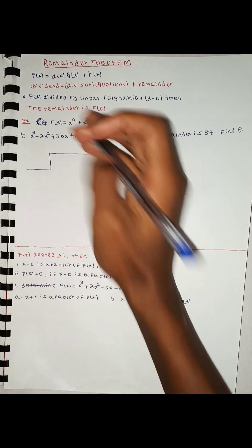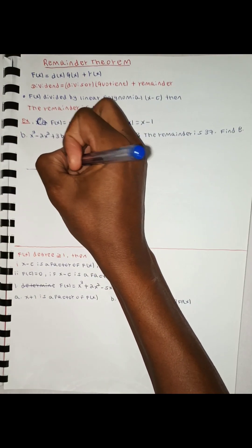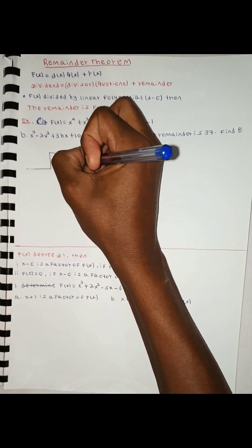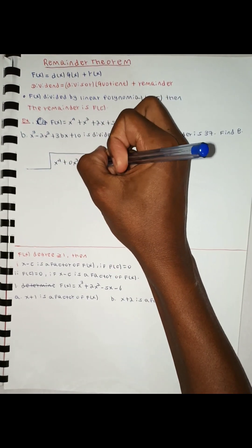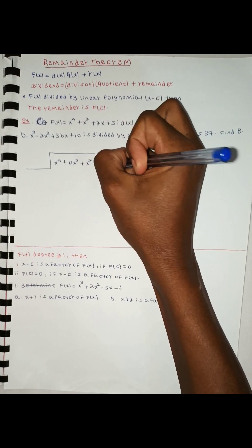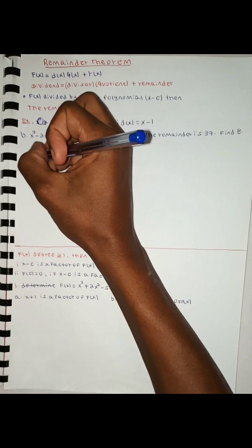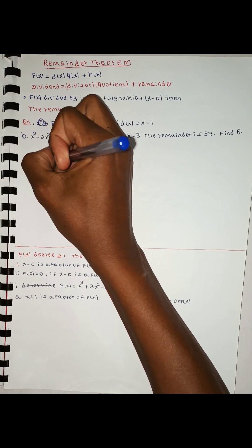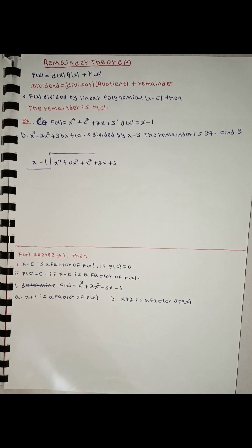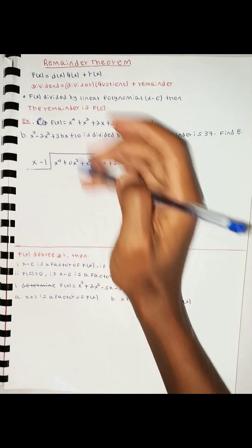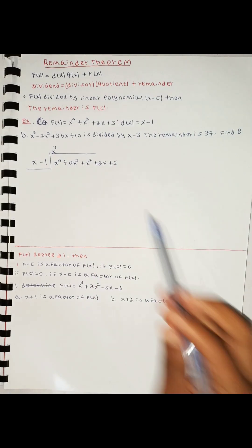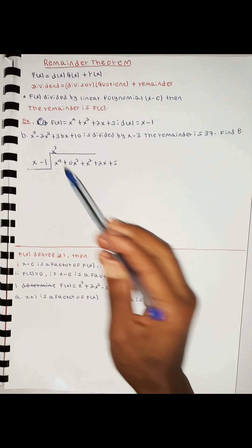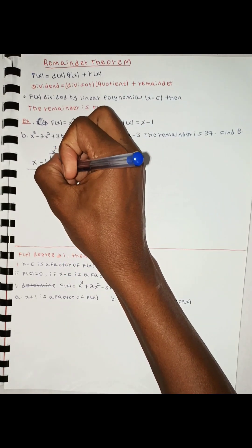The next step: x to the power of 4 plus 0x³ plus x² plus 2x plus 5, divided by x minus 1. So x to the 4th divided by x gives x cubed. x cubed times x gives x to the 4th.